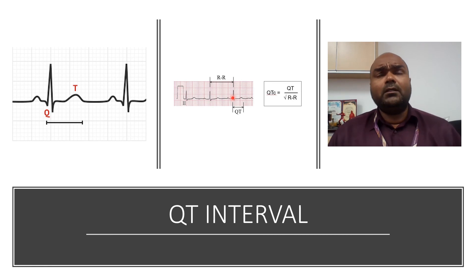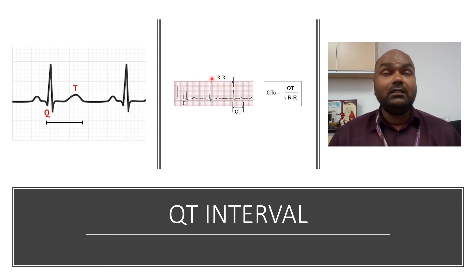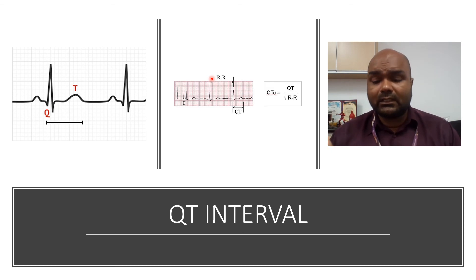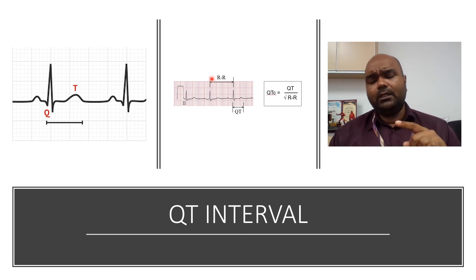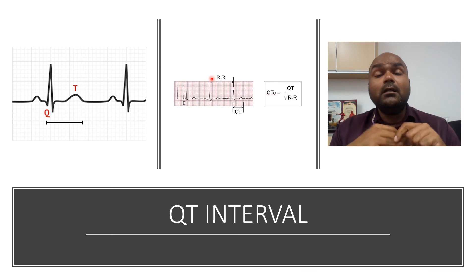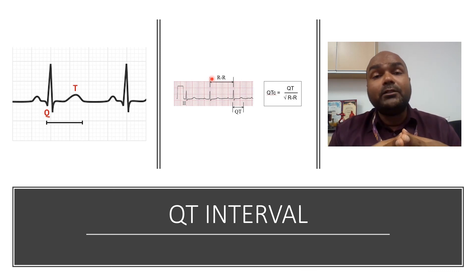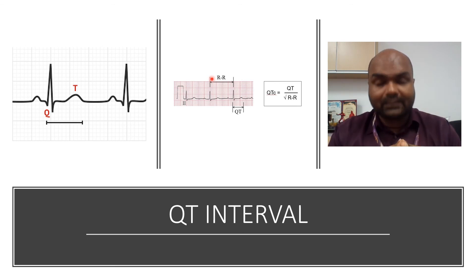A prolonged QT — more than half the RR interval — can indicate electrolyte problems such as hypokalemia, hypomagnesemia, or hypocalcemia. A shortened QT can be due to shortened QT syndrome or may be caused by certain drugs.